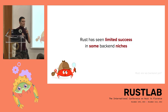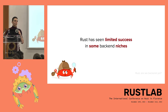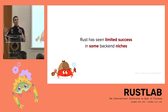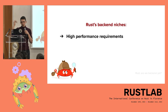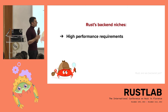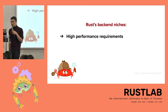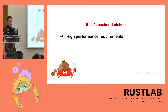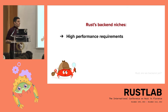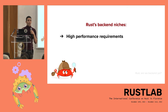But we have seen some limited success — it's not a bleak story. We've seen Rust gain footing and popularity in some niches in the backend world. Number one, as I mentioned, is high-performance systems where squeezing everything you can out of the hardware matters. This may be databases, proxies, trading systems, or generally something where latency or throughput is key.